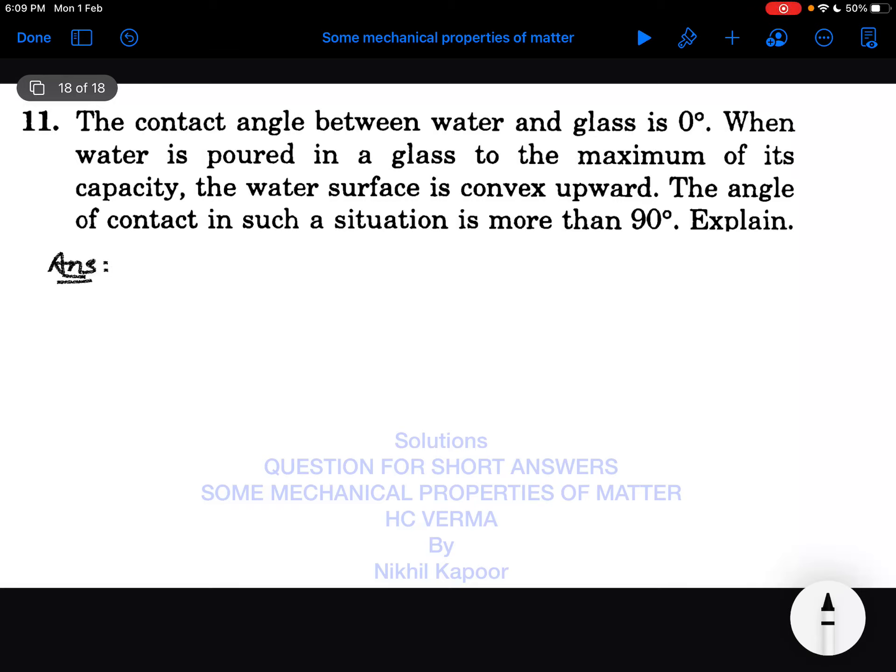The 11th example: the contact angle between water and glass is 0 degrees. That is true. When water is poured in a glass to the maximum of its capacity, the water surface is convex upward. Explain why the angle of contact is more than 90 degrees.